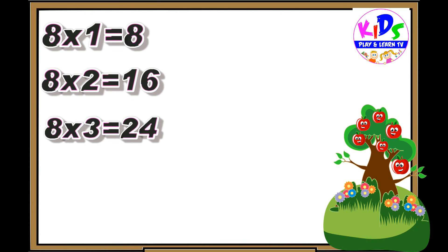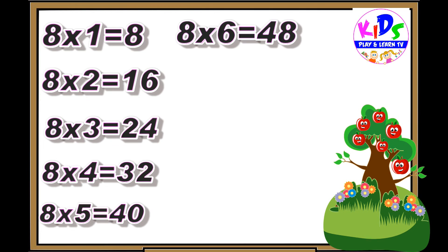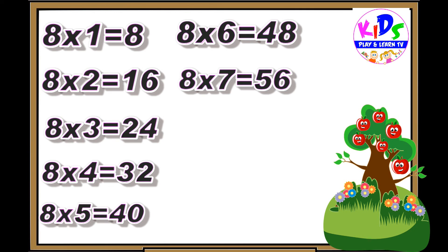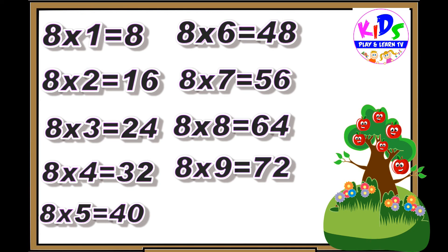Let's repeat. Eight ones are eight. Eight eights are sixty-four. Eight nines are seventy-two. Eight tens are eighty.